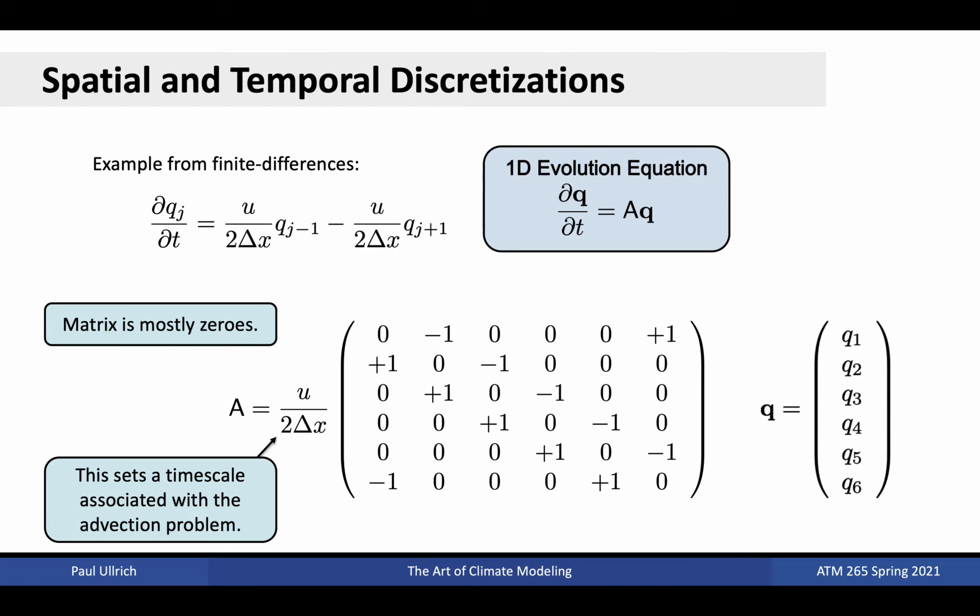Second, notice that every term in the matrix is either equal to positive u over 2 delta x or negative u over 2 delta x. The term u over delta x has units of inverse seconds, that is, it's a frequency, and so sets a timescale associated with the problem. Its inverse, dx over u, is associated with how quickly information propagates across one grid cell and is closely linked to the timescale of the discrete problem. We'll find later that this ratio actually sets a speed limit on the propagation of discrete information.